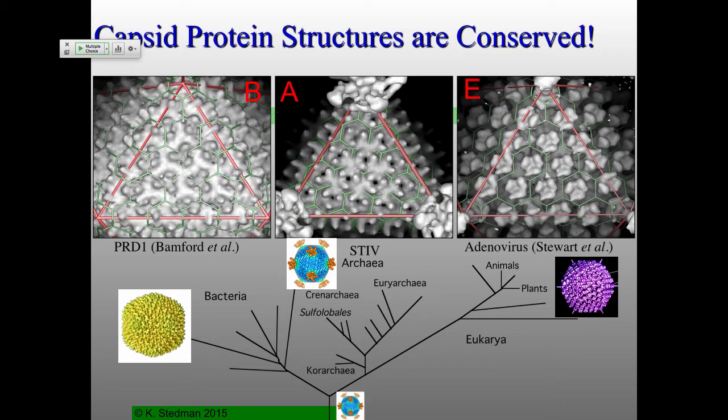What about the selection pressure? It's geometry. How do you package a really inefficient genetic material like nucleic acids? You want to make something similar to a sphere — you make it as an icosahedron. How do you make icosahedral subunits? One of the ways — and it's only one of the ways — is to have these double beta-barrel structures.